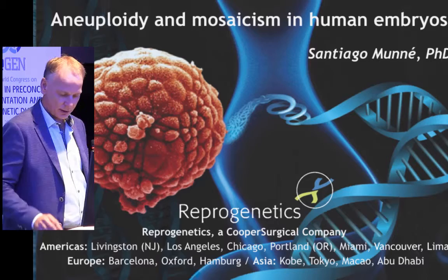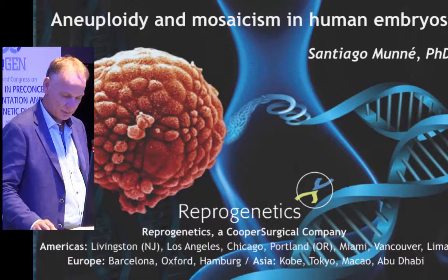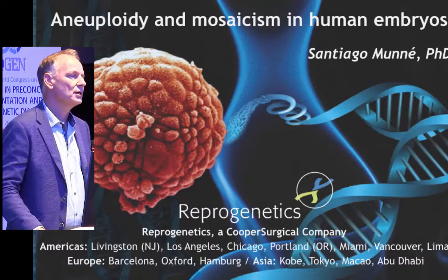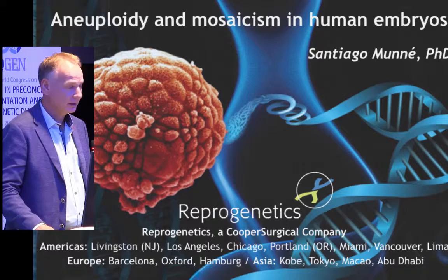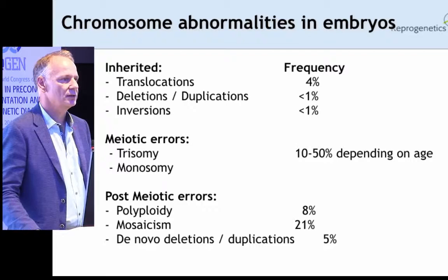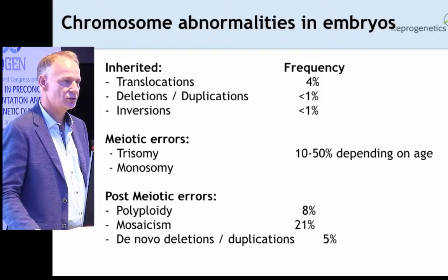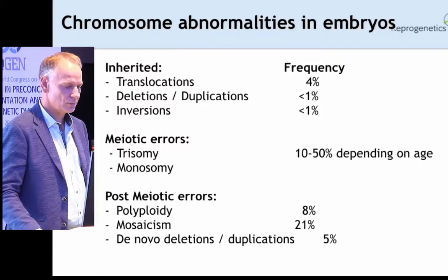Today I've been invited to give a talk and summarize what we know about chromosomal abnormalities, mostly aneuploidy and mosaicism in human embryos. Most of the data I'm going to present is on Day 5 biopsies, which is 99% of cases currently done in the U.S. There are different types of chromosomal abnormalities we can detect in embryos. Some are inherited, such as translocations, deletions, and inversions. Others are meiotic in origin, such as trisomies and monosomies.